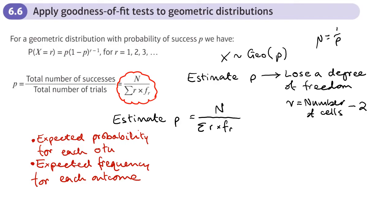Once we've done that, we then need to use the formula, so the sum of the observed squared over the expected minus N, the number of observations.